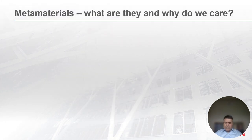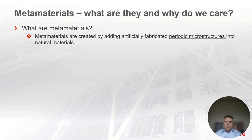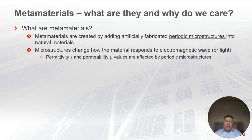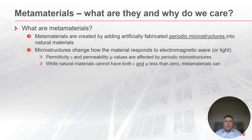Let's get started by talking about what are metamaterials and why do we care about metamaterials. Metamaterials are created by adding artificially fabricated periodic microstructure into natural materials. Microstructures change how the material responds to electromagnetic wave or light. There are two parameters that describe the interaction between electromagnetic wave and material: permittivity epsilon and permeability mu, and their values are affected by periodic microstructure. While natural materials cannot have both epsilon and mu less than zero, metamaterials can.